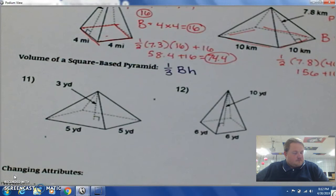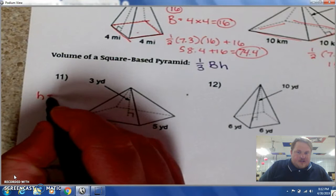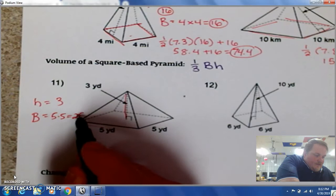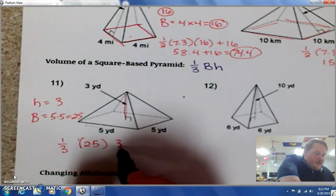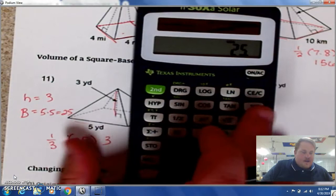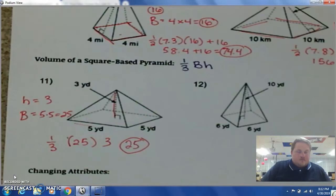So let's go ahead and label these. H is 3, it's that up and down line. And big B is that 5 times 5, which is 25. So 1 third times 25 times 3. 1 divided by 3 times 25 times 3 equals 25. That's the volume, how much you could fill if you were in there.